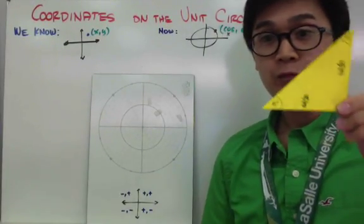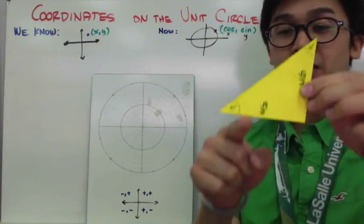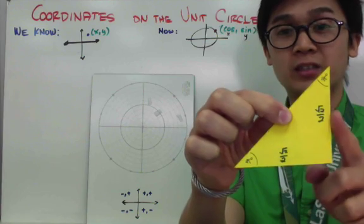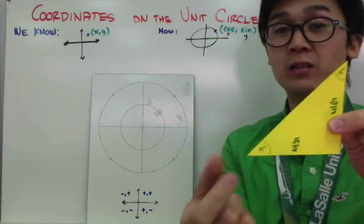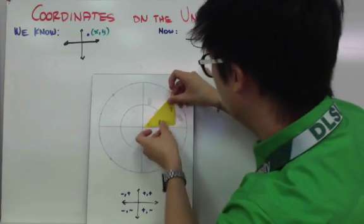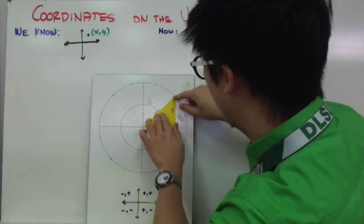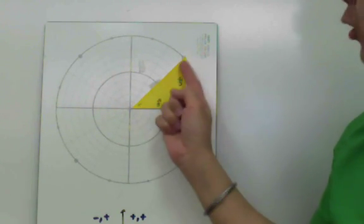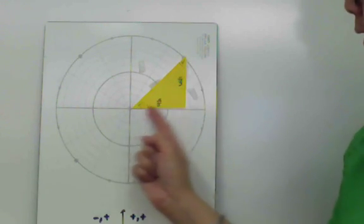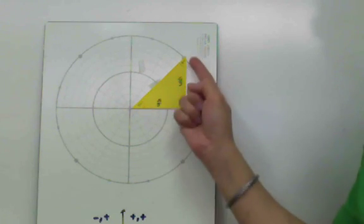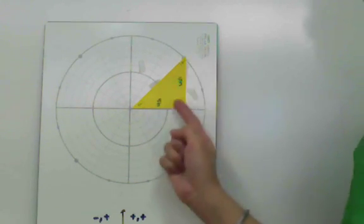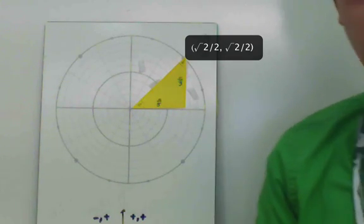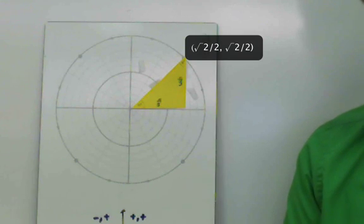Let's use the 45-45-90 degree triangle first. The measurement of each leg of this triangle is square root of 2 over 2. When we place this 45-degree triangle in the unit circle, the tip of the triangle will be on the unit circle. The ordered pair is determined by the legs: the x-axis gives us square root of 2 over 2 for the cosine value, and square root of 2 over 2 for the sine value. So our first ordered pair is (√2/2, √2/2).